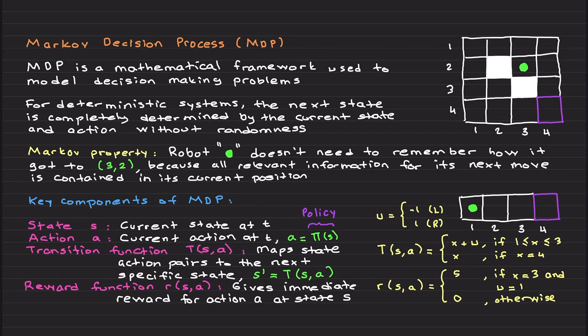This brings us to Markov Decision Process, or MDP, which is the main purpose of this video. MDP is a mathematical framework used to model decision making problems — you can apply it to any decision-making problem. I would like to first consider deterministic systems with no randomness. For deterministic systems, the next state is completely determined by the current state and action without randomness. For example, the robot from the previous video: if you would like to go right, you go right — the next state is determined by the current state and action. This is the famous Markov property.